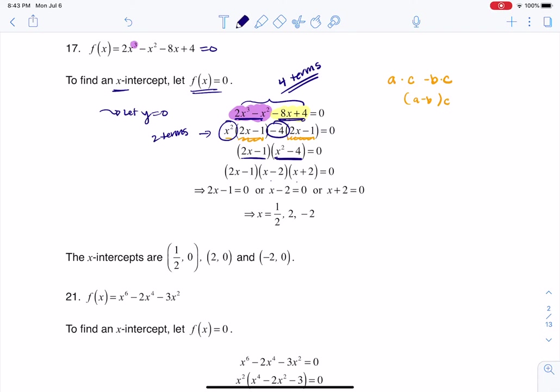Then it's a matter of using the zero product property. Either 2x minus 1 is 0, x minus 2 is 0, or x plus 2 is 0. Here are my three x-coordinates, but if we're talking about x-intercepts they need to be written as ordered pairs. That's why you see those three ordered pairs there. Thanks so much everyone, bye!